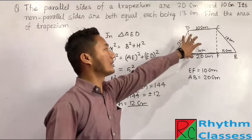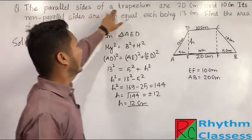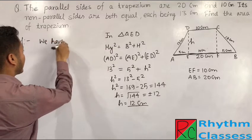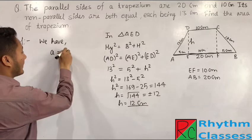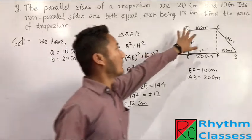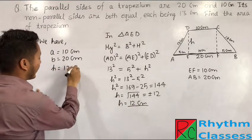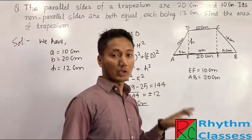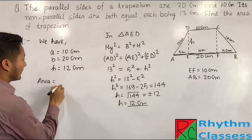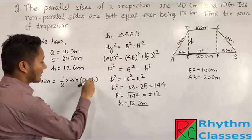Now we can find the area of this trapezium. The parallel sides are a = 10 cm and b = 20 cm, and the height h = 12 cm. The formula for the area of a trapezium is: Area = ½ × height × (sum of parallel sides) = ½ × h × (a + b).